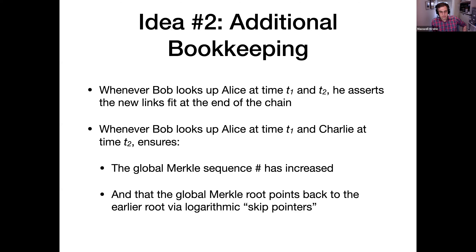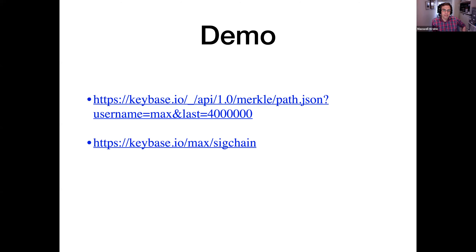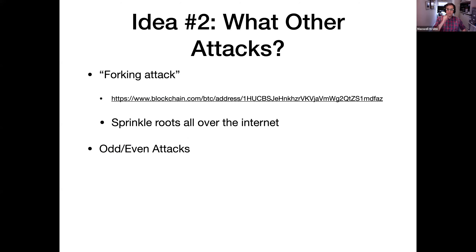There are other attacks that can be mounted against this Merkle tree version of Keybase. The first is that Keybase could still mount a forking attack — basically forking two different versions of what Keybase looks like. It could send Franz one sequence of Merkle tree updates and send me a different one. If Franz and I didn't have a way to back-channel, we might not really notice. As in Sunder, the server would be committed to keeping us separated without the ability to re-merge us.